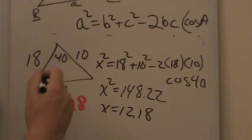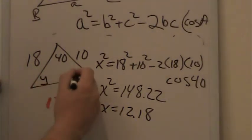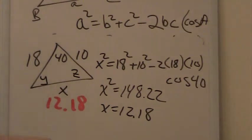So this side over here now would be 12.18. To find the other angles, such as y or z, then we could go about using law of sines like we did in the last lesson.